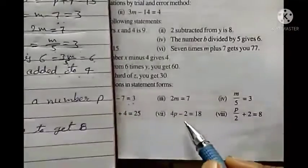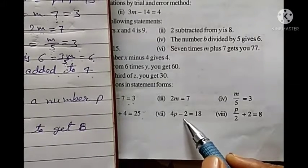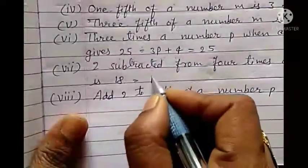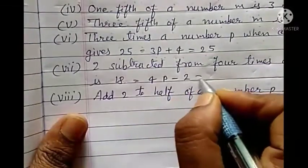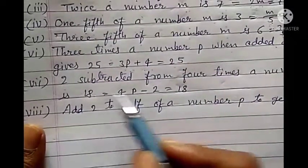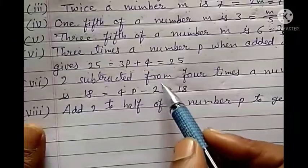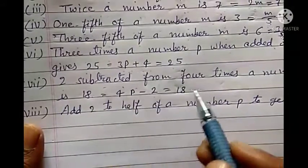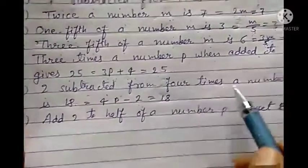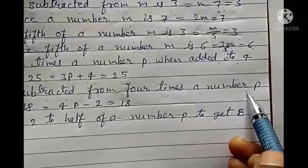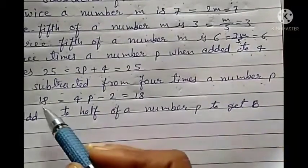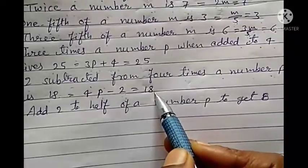Seventh: 4p minus 2 equals to 18. Two is subtracted from four times a number p. So the statement is: two subtracted from four times a number p gives 18.